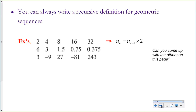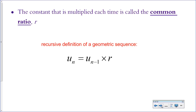You can always write a recursive definition for a geometric sequence simply by taking the previous term, which is u sub n minus 1, and multiplying it by the common ratio. So the other ones on this page would be u sub n minus 1 times a half, and u sub n minus 1 times negative 3. The constant that is multiplied each time is called the common ratio and we use the letter R. Here's the general form for the recursive definition of a geometric sequence.